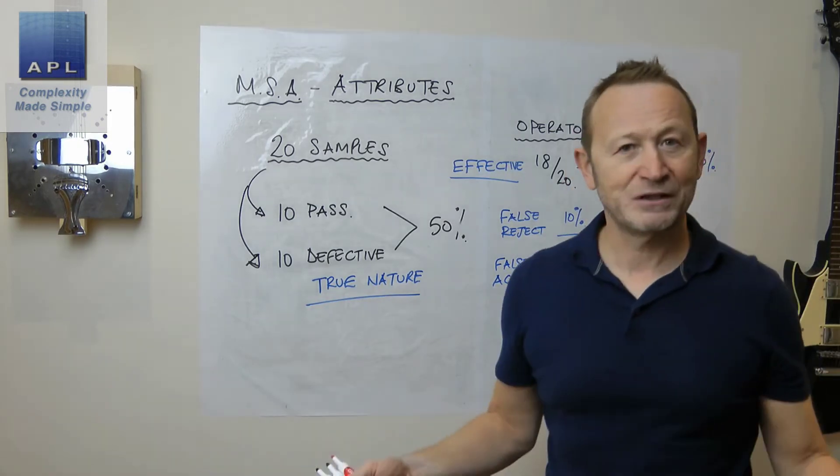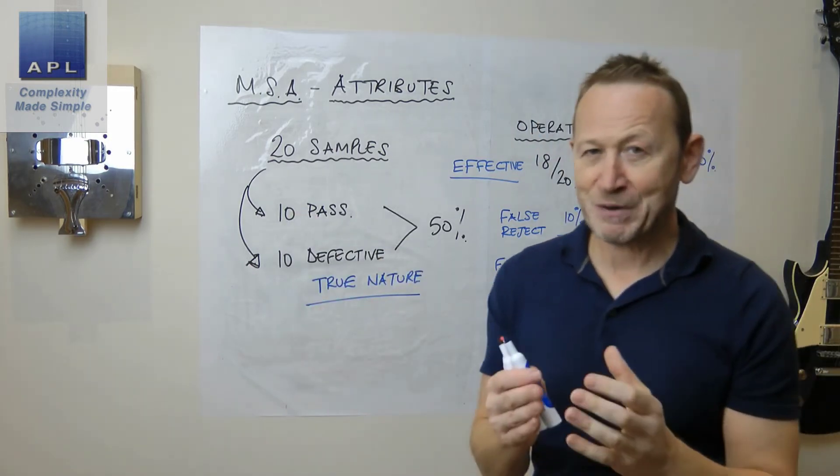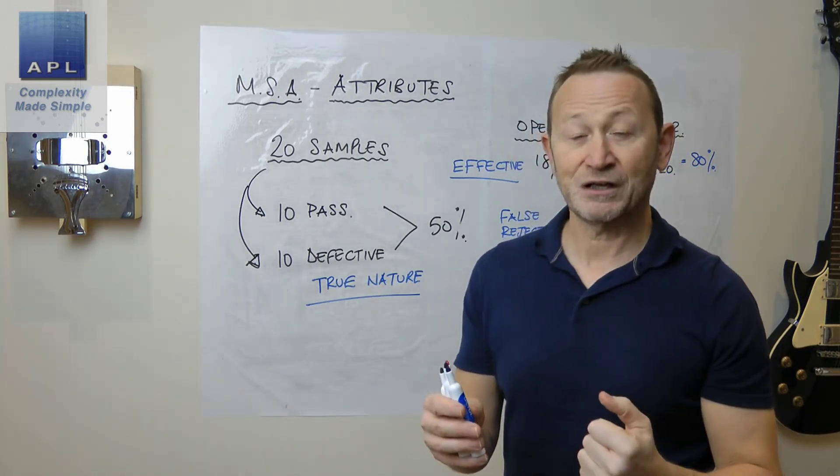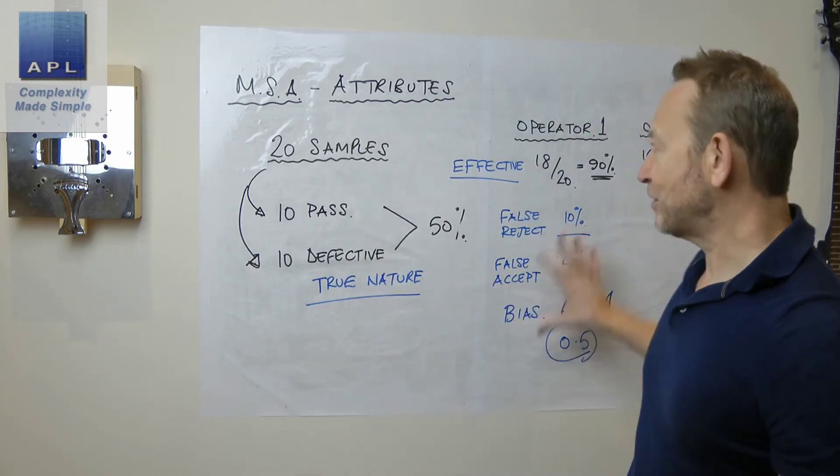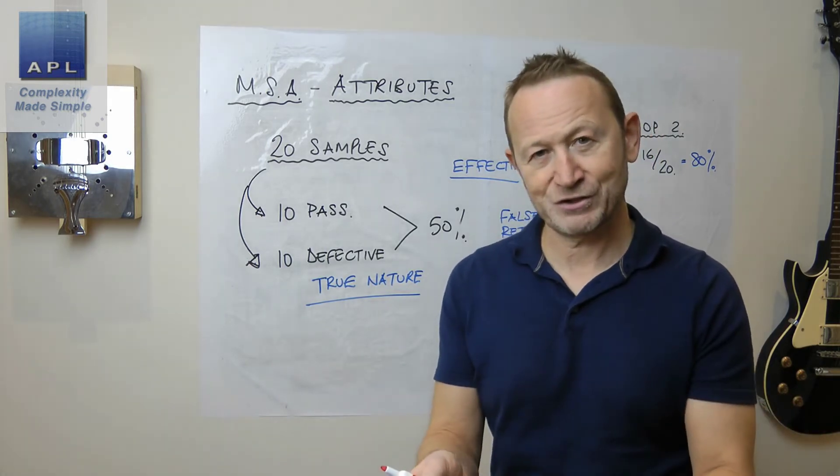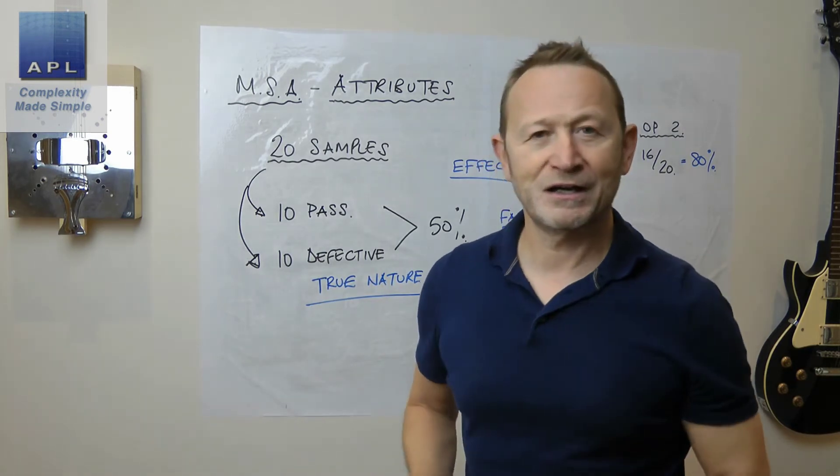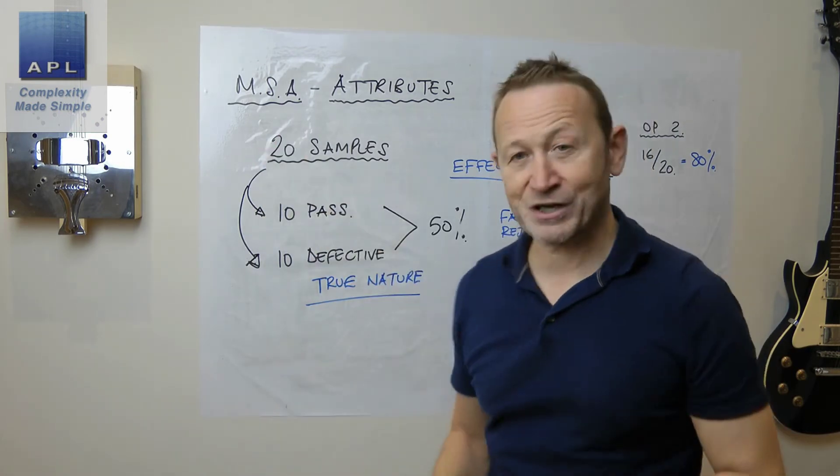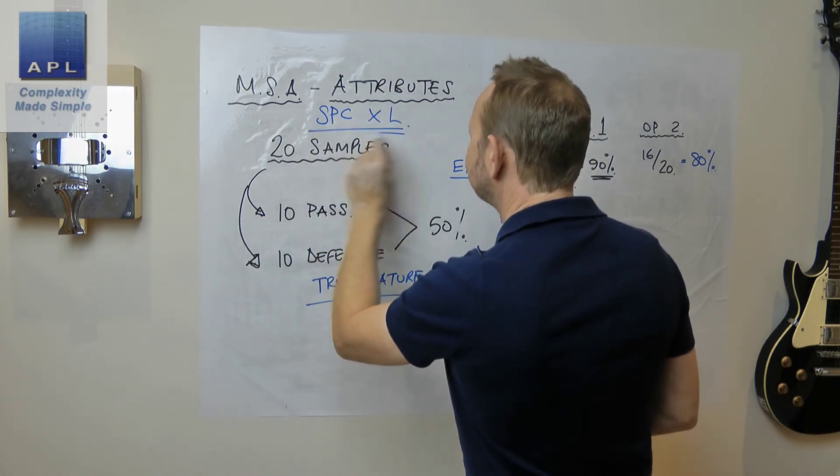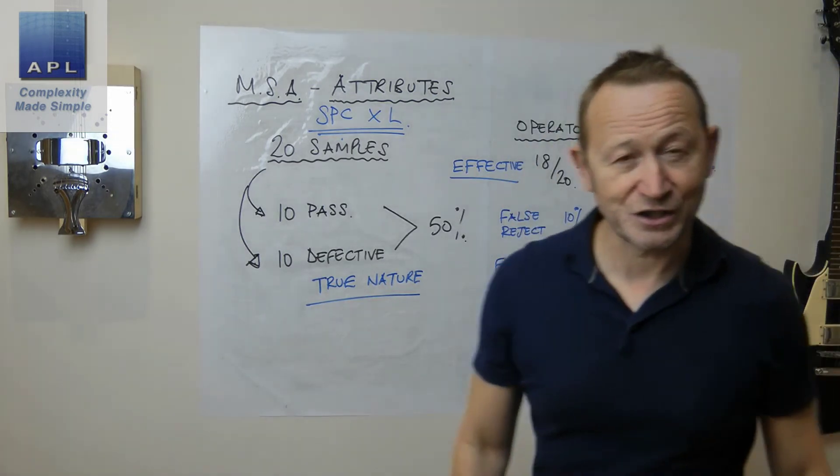So it's a very simple technique. The important point though, is this 50-50 for the passes and the fails. If you get this wrong, you will bias the MSA and create false results. So there's MSA for attributes. I personally use SPC-XL software to do this. If you go looking on my YouTube channel, you will find a little tutorial on how to do an MSA with attributes for SPC. SPC-XL software is my software of choice. And the software basically will work out these statistics for you.